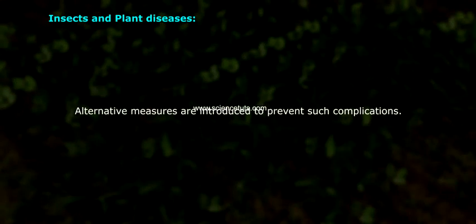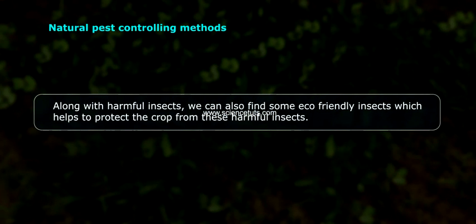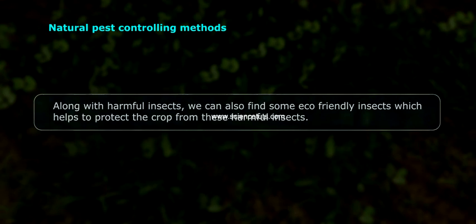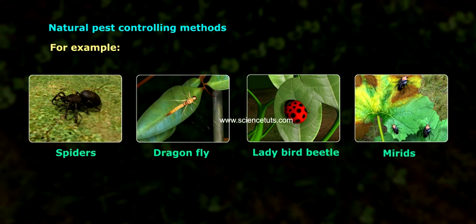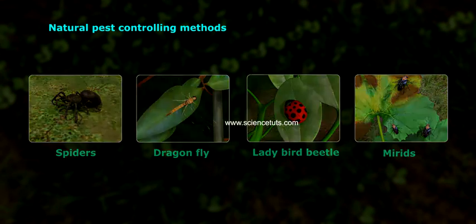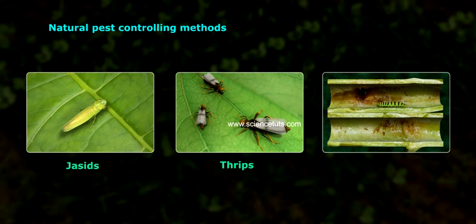When farmers spray chemicals to the field, they are also getting exposed to them, inhale them, and thus it enters into the human body. Alternative measures are introduced to prevent such complications. For example, natural pest controlling methods — along with harmful insects, we can also find some eco-friendly insects which help protect the crops from harmful insects.